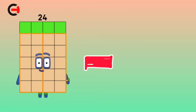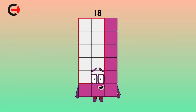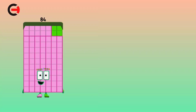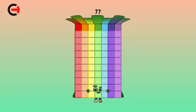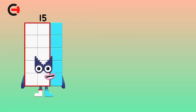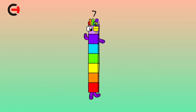24 minus 6 is equal 18. 84 minus 7 is equal 77. 15 minus 8 is equal 7.